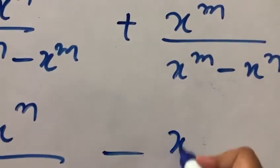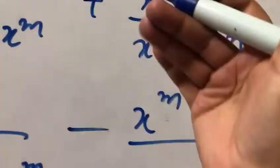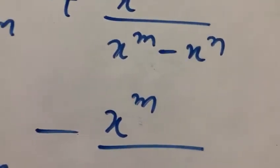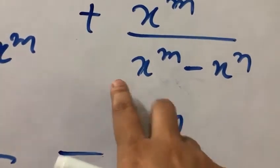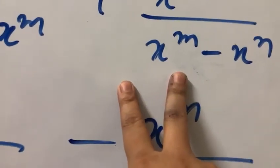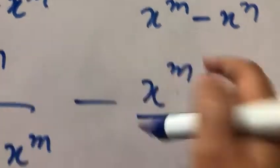The first term will be minus x raised to power m in the denominator. When we multiply with minus 1, what happens? Whenever we multiply by minus, we change the sign, so one term will become negative and the other will become positive.